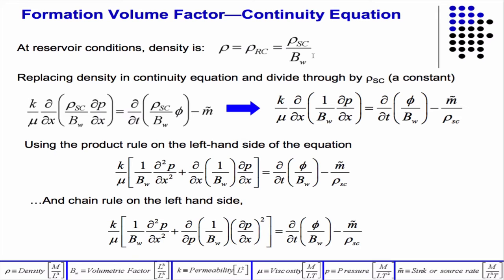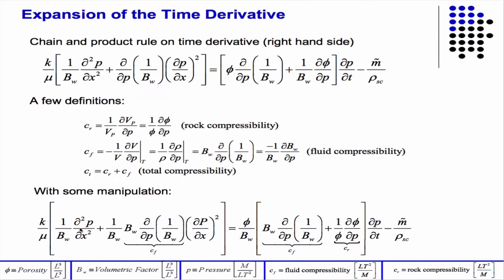And then we plug that into the equations, then we just begin some manipulation. So, we use the product rule on the left-hand side of the equation and the chain rule on the left-hand side of the equation to the time derivative term, we get this. And then what we do is just a little trick because what we end up with is something that looks like the fluid compressibility and something that looks like the rock compressibility, but they're not quite. So, what we do is just multiply the equation by one.